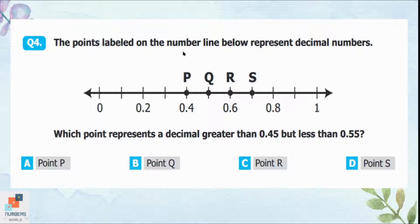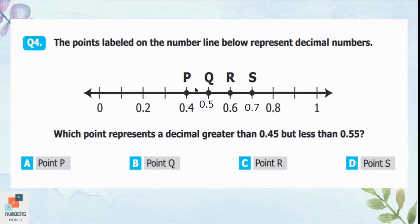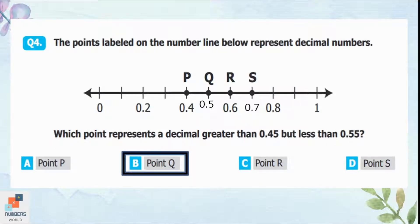Question 4: The points on the number line represent decimal numbers. Which point represents a decimal greater than 0.45 but less than 0.55? Finding the missing numbers: the center of 0.4 and 0.6 is 0.5, and the center of 0.6 and 0.8 is 0.7. So the center of 0.45 and 0.55 is point Q, which is 0.5. Option B is the correct answer.